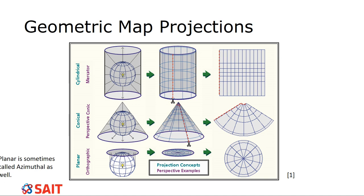The first category is geometric map projections — this is the shape of the paper we wrap around the earth to project onto it. The first of the three most common types is cylindrical: we take a piece of paper, wrap it around the globe, and project the ground onto it. Things get stretched out, especially closer to the poles, and it's narrower at the equator.